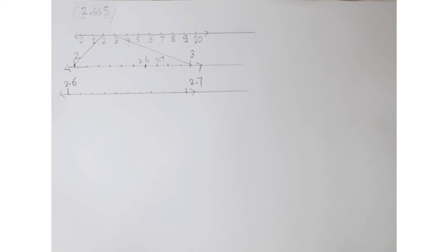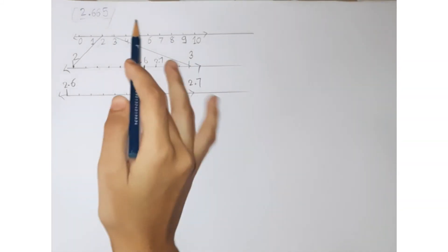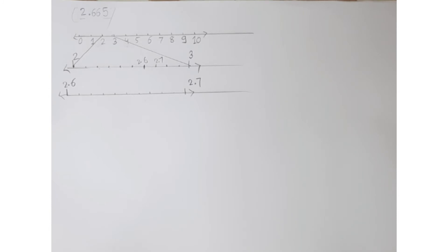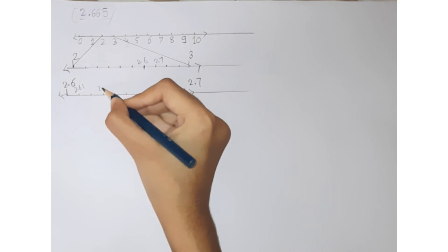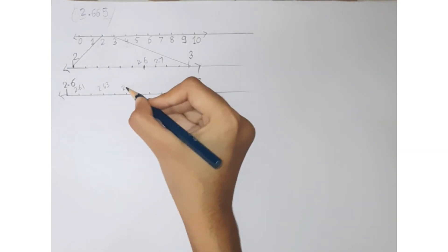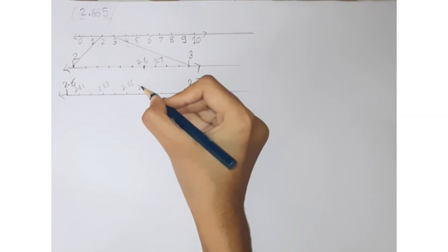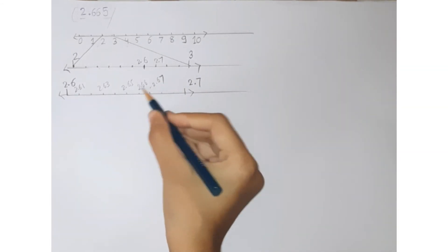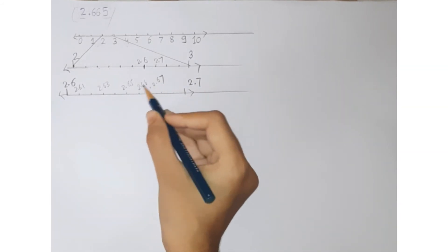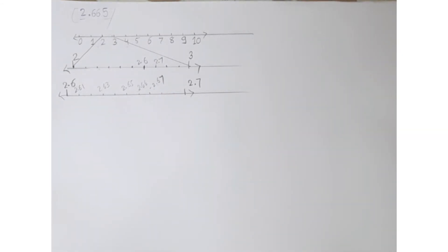Now here this 2.665 will lie between 2.66 and 2.67. Here it would be 2.61, 2.63, 2.65, 2.66, 2.67. Between 2.66 and 2.67, so we will further magnify this.